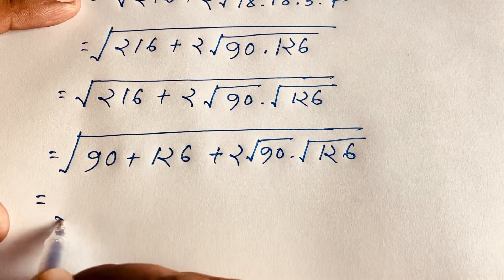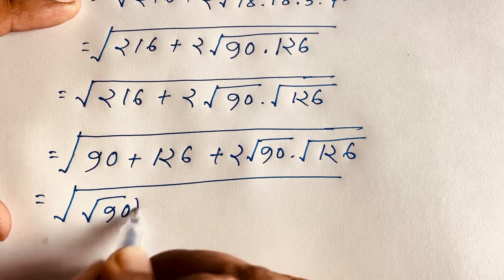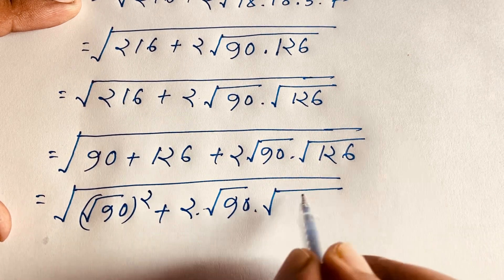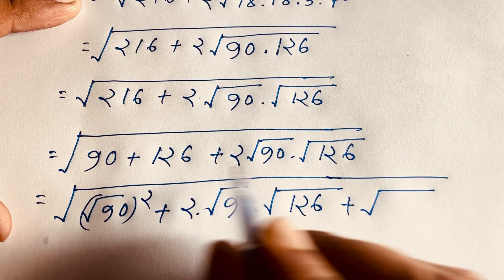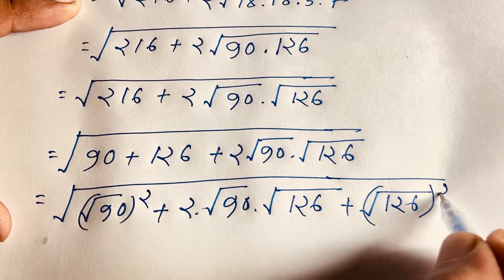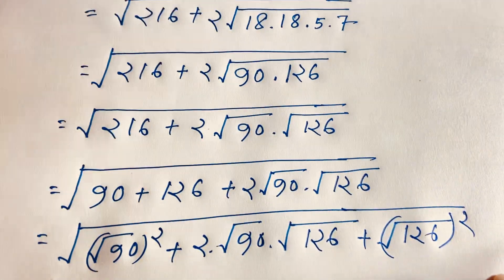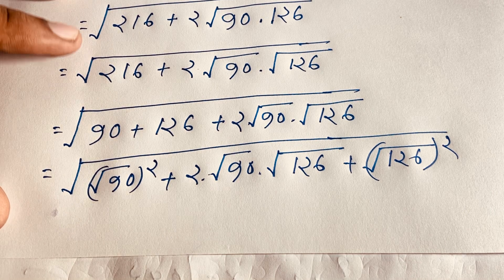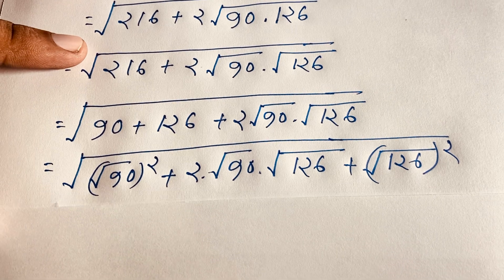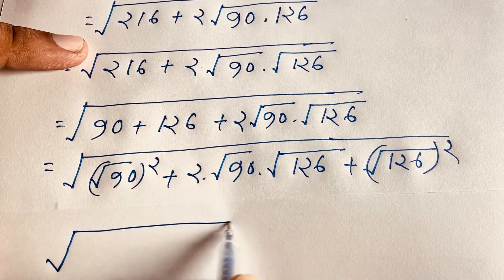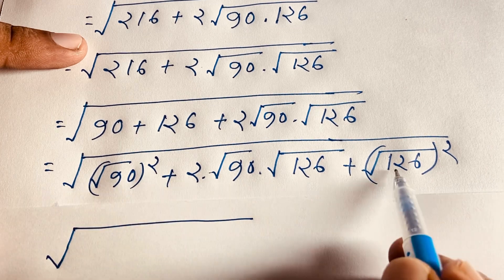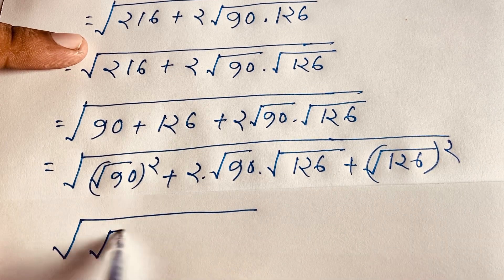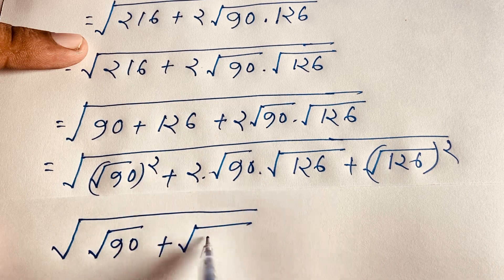Now in this expression, we recognize that square root 90 squared plus 2 times square root 90 times square root 126 plus square root 126 squared matches the pattern a squared plus 2ab plus b squared, which equals (a plus b) squared. So this becomes (square root 90 plus square root 126) whole squared.